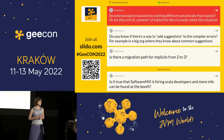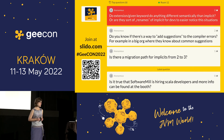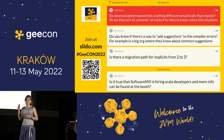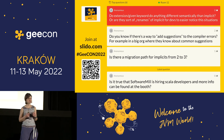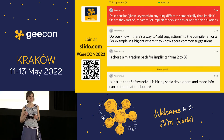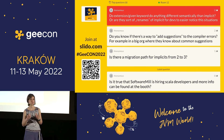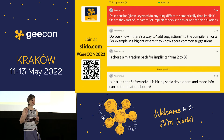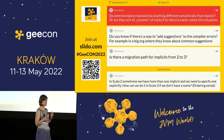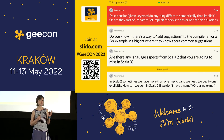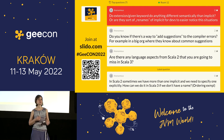Question: Do the extension and given keywords do anything different semantically than implicit, or are they sort of renames? For the sake of this presentation it's the same, but actually it's more complicated. If you look at the Scala 3 documentation there are some subtle — or not so subtle — things that change. The one thing that is one-to-one is context bounds, implicitly, and summon — that's a direct mapping. But given and using — it's more complicated.